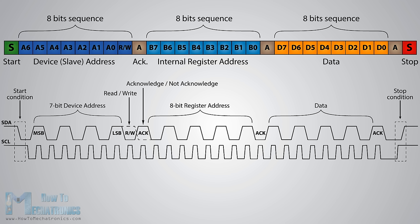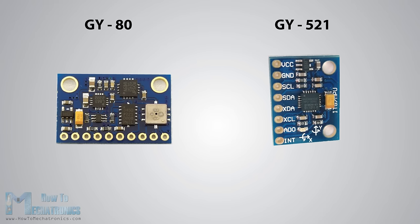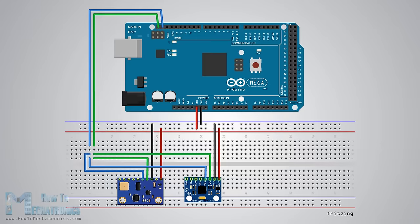That's how the I2C communication protocol works. Now let's make an example and demonstrate it using the Arduino board and some sensors. I will use the GY80 breakout board which consists of five different sensors and the GY521 breakout board which consists of three different sensors, so we can get data from eight different sensors with just two wires. The serial clock pin of the Arduino board will be connected to the serial clock pins of the two breakout boards, and the same goes for the serial data pins. We will also power the boards with the ground and the 5-volt pin from the Arduino board. Note that we are not using pull-up resistors because the breakout boards already have them.